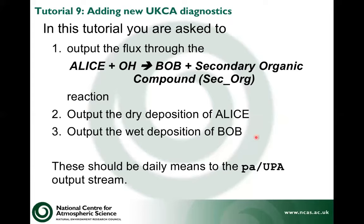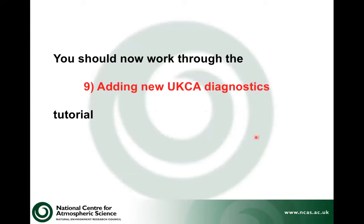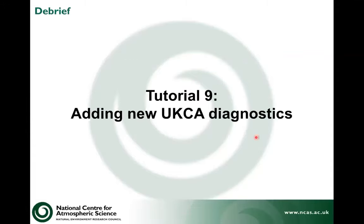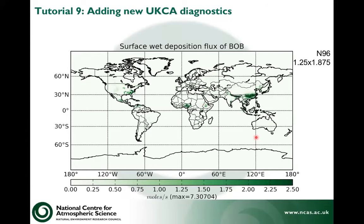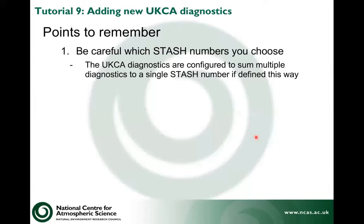In this tutorial, you're asked to output the flux through the Alice + OH → Bob and SecOrg reaction, the dry deposition of Alice, and the wet deposition of Bob, outputting these as daily means to the UPA stream. When you've finished, you should be able to see the actual flux — at N96 this is what the surface flux through that reaction, the surface dry deposition flux, and the surface wet deposition flux look like for these species. Things to remember: be careful about the STASH numbers you choose because we can sum them, and be a little careful picking the slots — try and keep things together as much as you can.